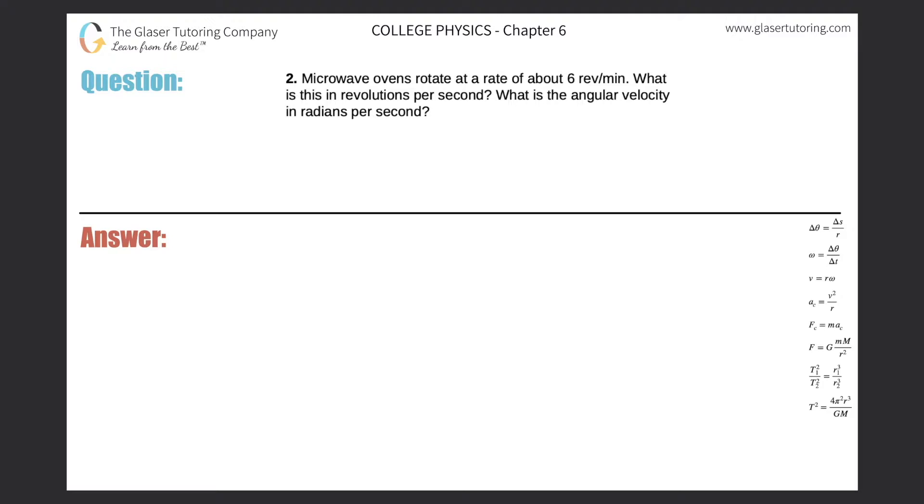Number two: Microwave ovens rotate at a rate of about six revolutions per minute. What is this in revolutions per second? So basically what we have to do is we have to convert minutes into seconds, right? So let's write down what we're given.